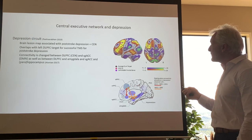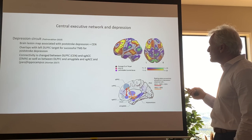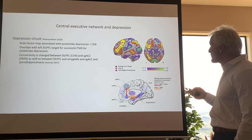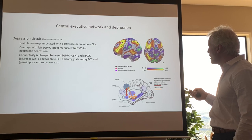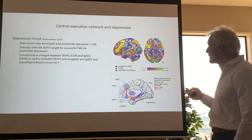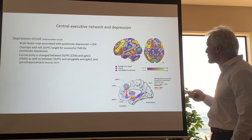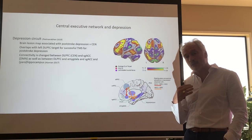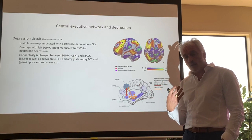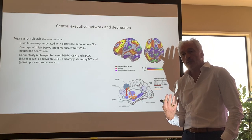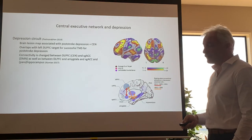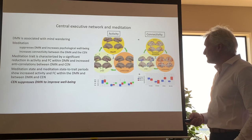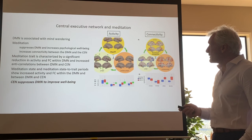Looking at brain maps associated with depression — specifically post-stroke depression — the central executive or frontal parietal control network perfectly overlaps with the areas where a stroke will result in depression. This suggests that depression might be the result of a dysfunctional control system where the frontal parietal control network is not capable of reducing the inherent uncertainty in the environment, and therefore may prefer not to engage with the environment anymore.